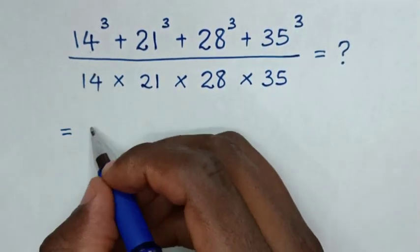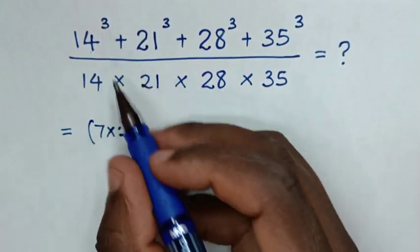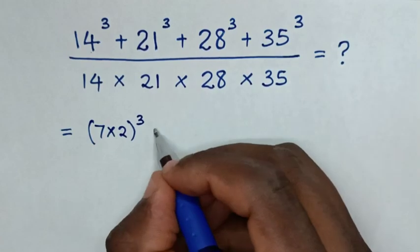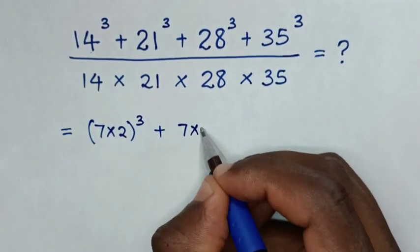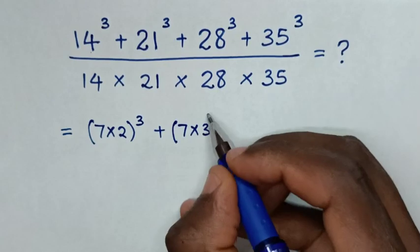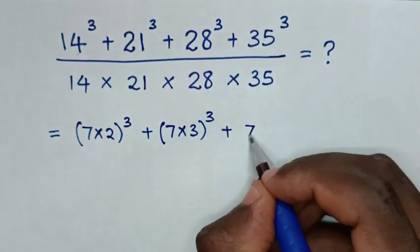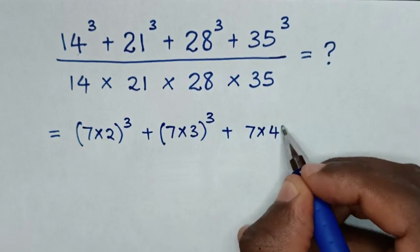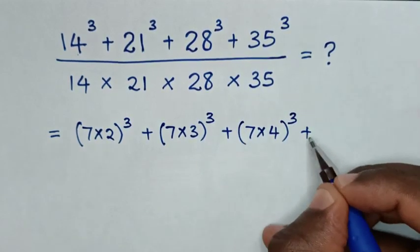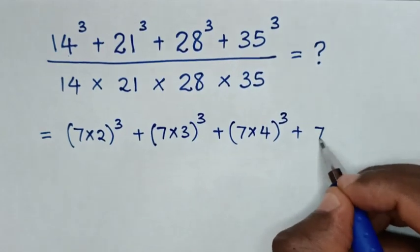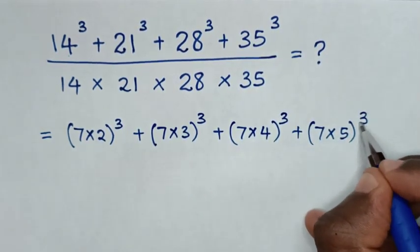So 14 is the same as (7 times 2) power 3, plus 21 is (7 times 3) power 3, plus 28 is (7 times 4) power 3, plus 35 is (7 times 5) power 3.